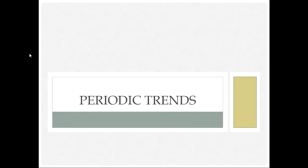Throughout this unit, we've talked a lot about trends and patterns. Some of those trends and patterns we saw are valence electrons, group numbers, period numbers, main energy levels, sub-levels, and it all depended on the placement of these elements.